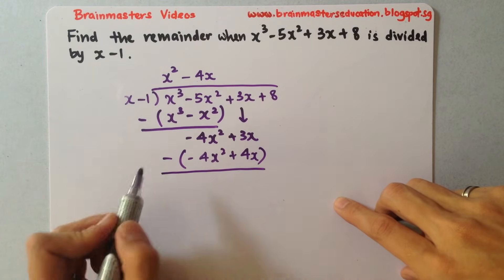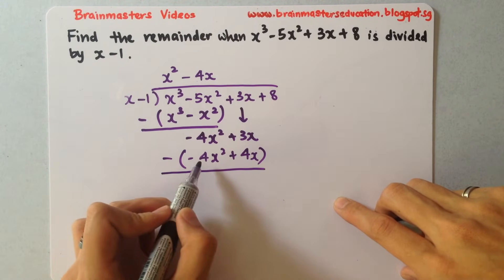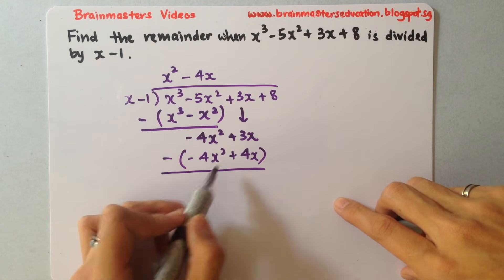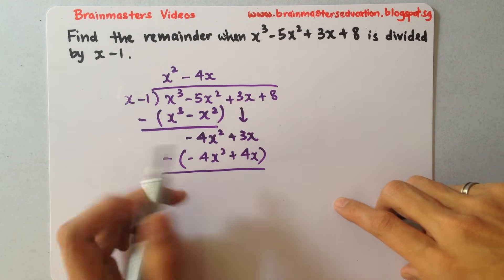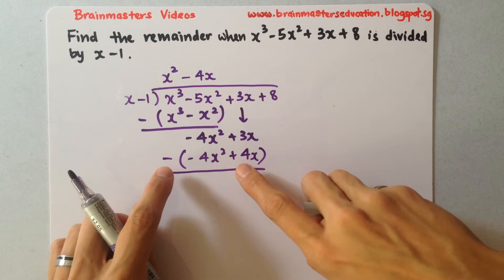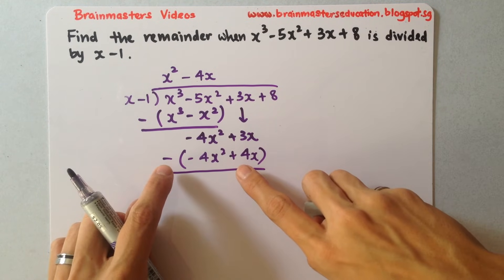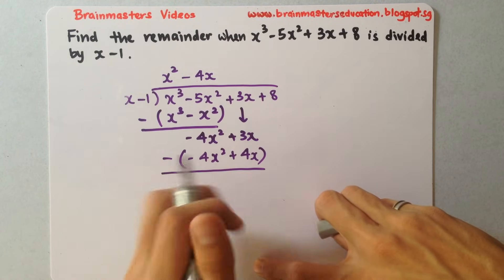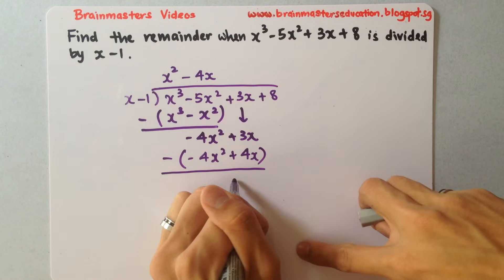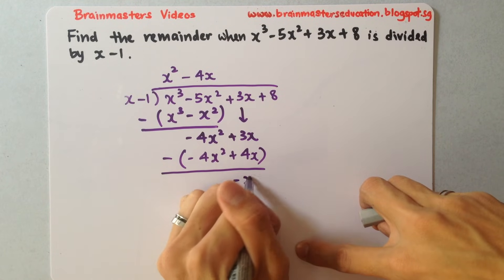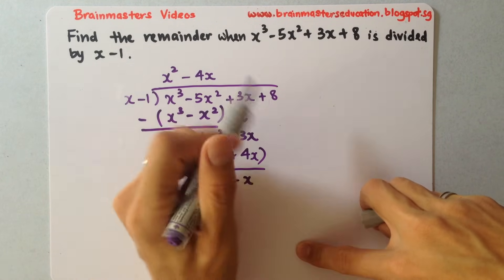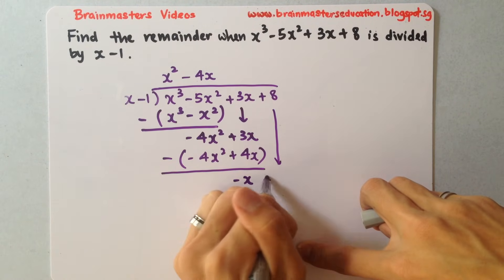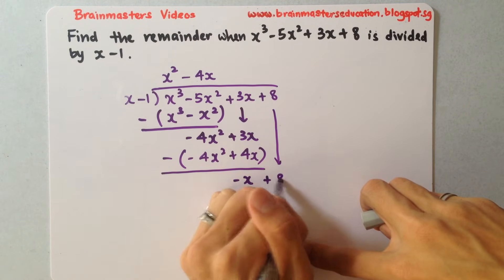Work this out again. Notice there is always a zero. So you just need to look at this — it will be negative as you multiply them together. So 3x minus 4x will give you negative x. Then bring down the last term, which is plus 8.